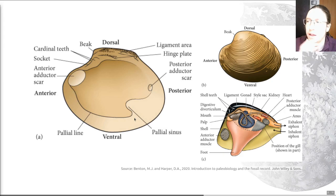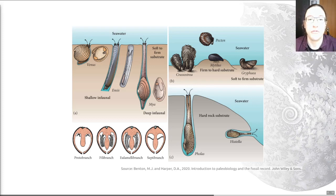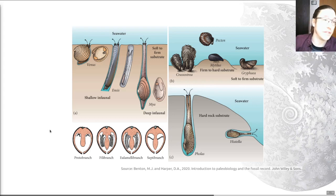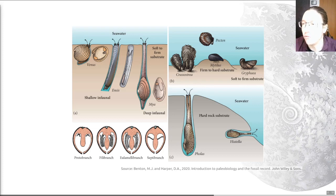The arrangement of the teeth, the nature of the adductor scars, and the palleal line and palleal sinus are all very useful for identifying members of this group. The first part of the animal that starts growing — the beak — is often called the umbo. In addition to hinge structure, gill structure is used to separate different members of this group, though that's not critical to learn at this stage. The earliest examples in the fossil record were marine shallow burrowers, but this group has since evolved epifaunal, deep burrowing, and boring strategies — creatures that can dig into rock.